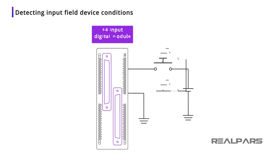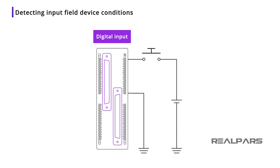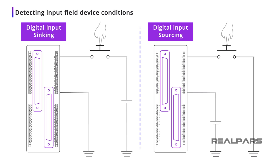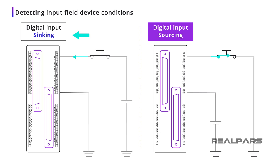Alright, now that we know how the digital input module determines the input device condition, let's talk about the current flow between the power supply and the input module. There is a current flow, but it is very small and usually under 10 milliamps. Notice in our example that the current is flowing into the PLC module. Depending on the type of PLC input module and how it's connected with the input device, the current could flow in or out of the module — that's where the terms sinking and sourcing come into the picture.